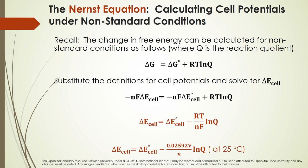We're going to substitute our definitions for cell potentials into our equation for delta G and then solve for cell potential under non-standard conditions. We get: negative NF times delta E_cell equals negative NF times delta E°_cell, plus the correction term RT times the natural log of Q.